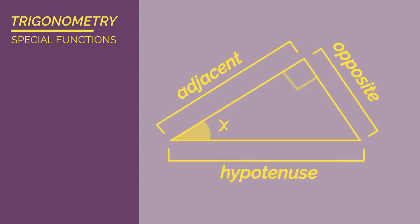The hypotenuse is the longest side and is opposite the right angle. Then we have the adjacent and the opposite. These change positions depending upon which angle we are using. This side is the opposite because it is opposite the angle, and this side is the adjacent because it is next to the angle.